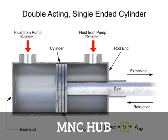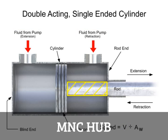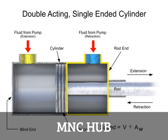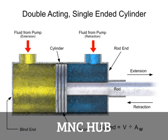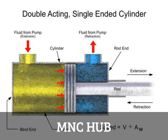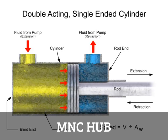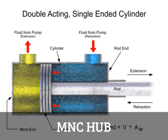Let's assume that the volumetric flow rate is equal for each inlet. Because the rod takes up space within the cylinder, less fluid is required to fill that side. This means that the fluid can fill the rod end side more quickly than it can fill the blind end. Since the rod end side fills with fluid more quickly, the cylinder will always retract faster than it can extend.